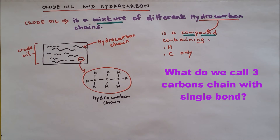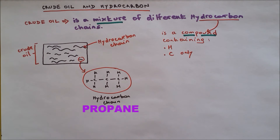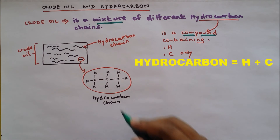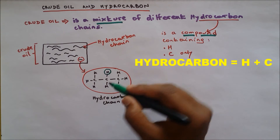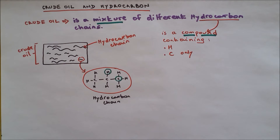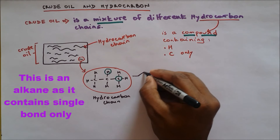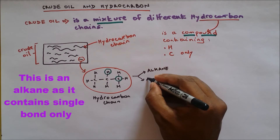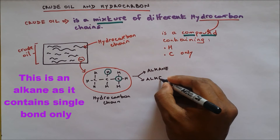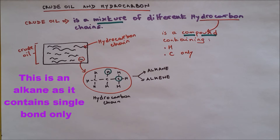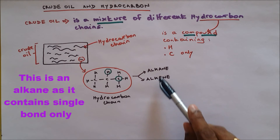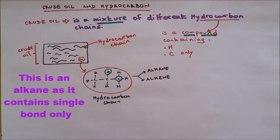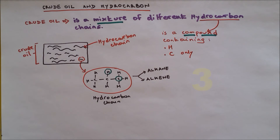This hydrocarbon chain contains three carbons, so it is propane. The important thing you have to know is that hydrocarbon chains contain hydrogen and carbon. A hydrocarbon chain could be either an alkane or it could be an alkene, which I will be covering later on but not in this video. Remember there are two important forms of hydrocarbon chain — alkane and alkene — depending on the number of bonds between the carbons.